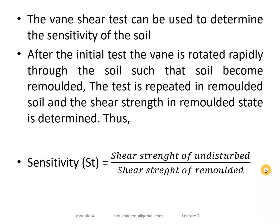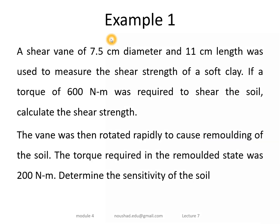In Example 1, we have a vane of diameter 7.5 cm and height 11 cm, used to measure the shear strength of a soft clay. The torque obtained is 600 Nm. In the second case, the vane is rapidly rotated to remold the soil, and the torque required is 200 Nm. We need to find the shear strength and the sensitivity of the soil.